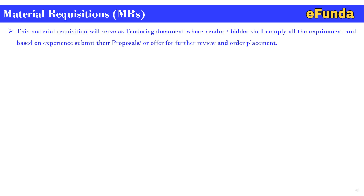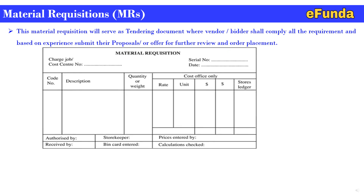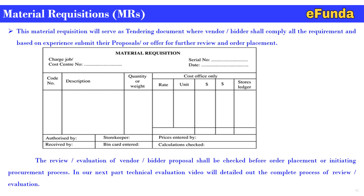This material requisition will serve as a tendering document where the vendor or reader shall comply with all the requirements and, based on experience, submit their proposals or technical offer for further review and order placement. A simplified material requisition form is shown for ready reference, illustrating how various client requirements are covered and how it serves as a tendering document to the vendor. The review and evaluation of a vendor offer or BDEL proposal shall be checked thoroughly before order placement or initiating the procurement process.